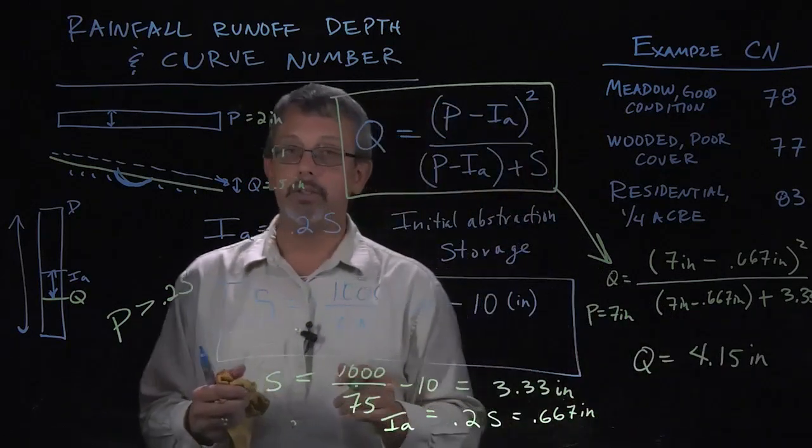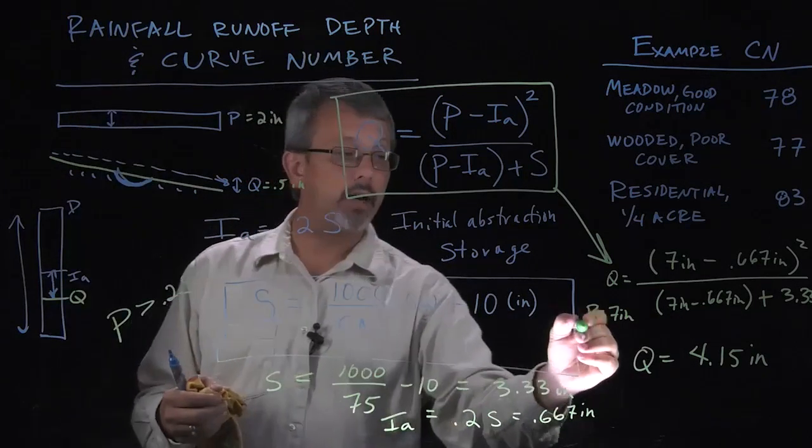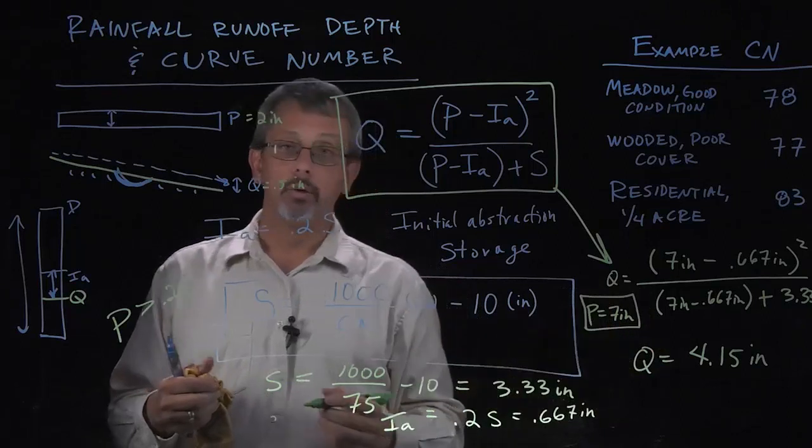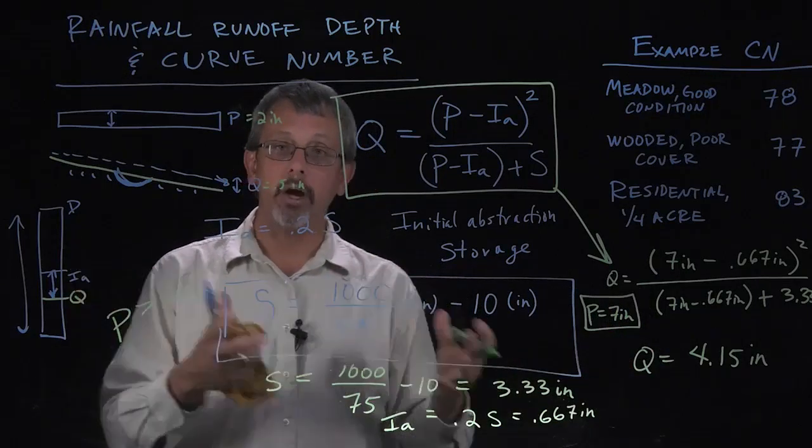What does that mean to us? Effectively what that means is that even though we had seven inches of rainfall that fell, we can consider only 4.15 inches as flowing off of that surface.